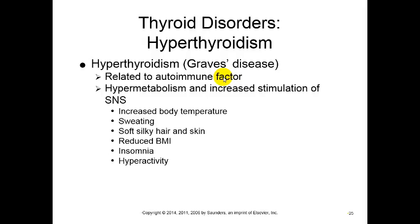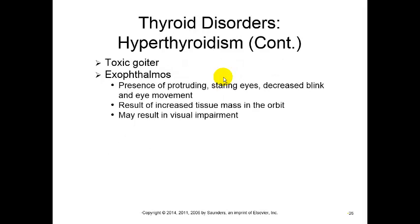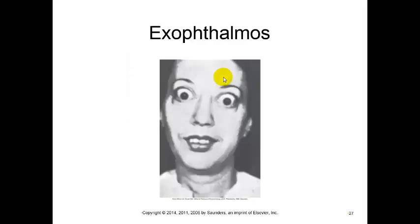These conditions include increased body temperature, sweating, soft silky hair and skin, a reduced BMI as hypermetabolism causes weight loss, insomnia, hyperactivity, and jitteriness. You might also have exophthalmos, where your eyeballs protrude and there is decreased blinking. This leads to a toxic goiter, constantly producing T3 and T4.